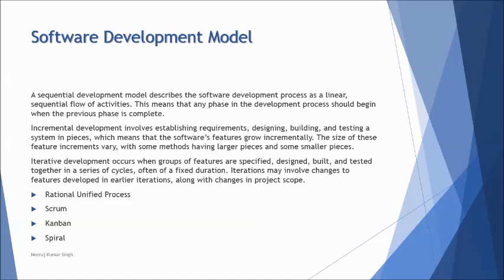In an iterative model, each iteration adds something extra to the previous requirements — every iteration includes the previous set plus new requirements. This makes testing more complex and important, requiring special measures. Examples of iterative models include RUP (Rational Unified Process), Scrum, Kanban, and Spiral. Agile also falls under this category.